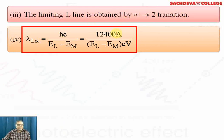Lambda L alpha, wavelength, equals hc over energy difference of the two shells: (E_L - E_M). A shortcut formula is used: 12,400 angstrom over (E_L - E_M) in eV.